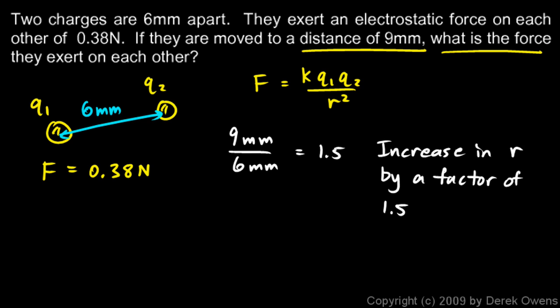So I just take this original force here, 0.38 newtons, and divide it by this number, 1.5 squared. And that's it, that would be my answer. 0.38 divided by 1.5 squared comes out to 0.17. And that's the answer.